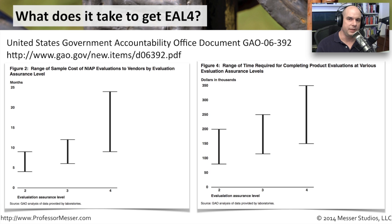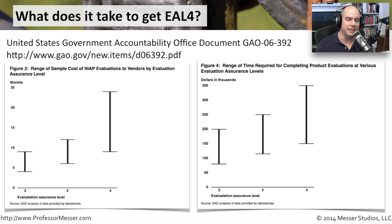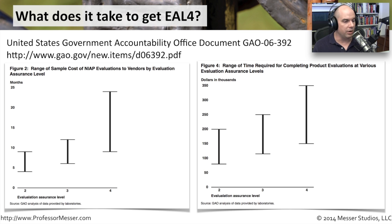To get an idea of what manufacturers are going through to get their devices certified at an EAL4 level, I grabbed these stats from the United States Government Accountability Office — document GA006392, with a URL if you want to download the PDF. It shows just how long it takes to get something EAL compliant. For EAL2, it may take anywhere from five to just under ten months. EAL4 goes from ten months, perhaps all the way up to 24 or 25 months — taking years to get that particular device, software, or operating system EAL4 certified.